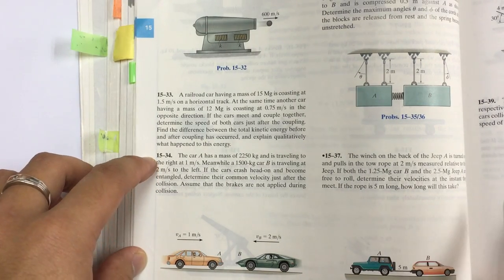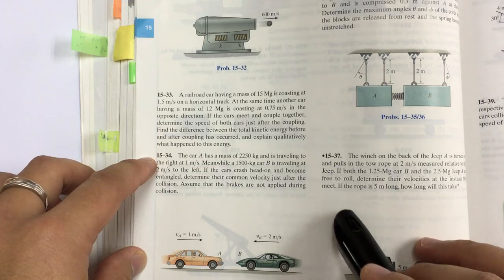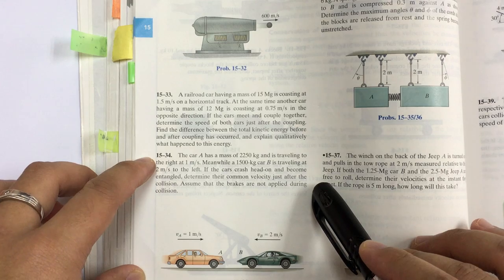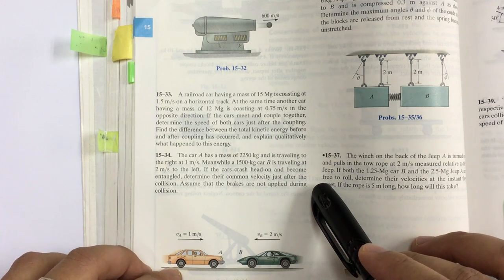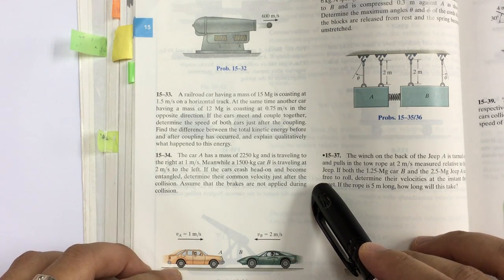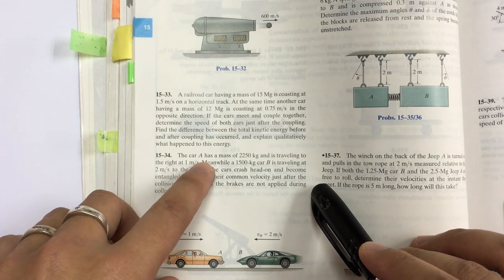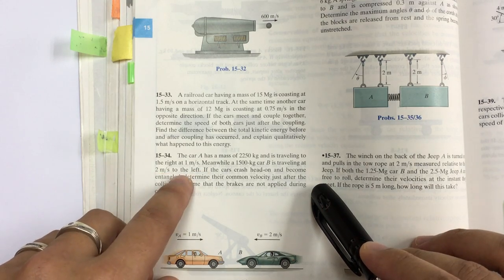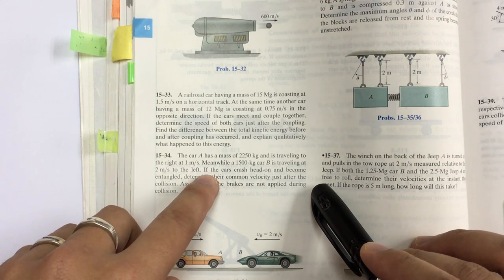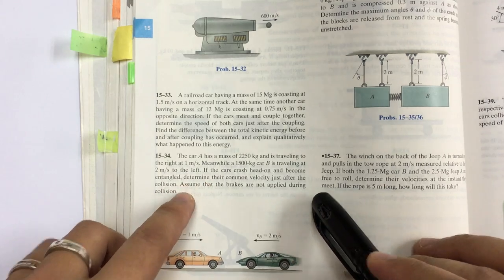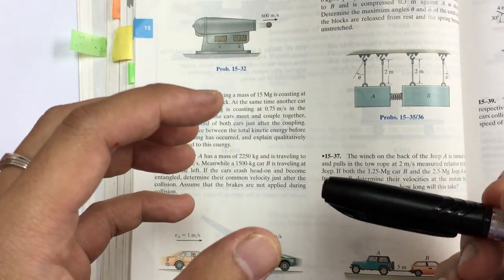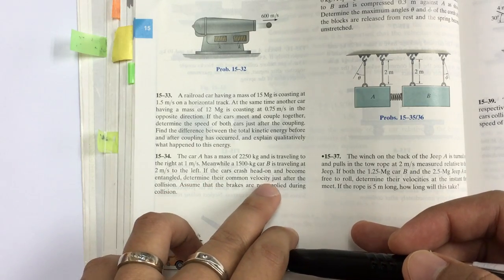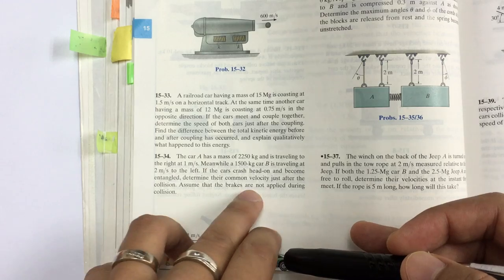In problem 15.34, this is basically a refresher for conservation of momentum. It says here car A has a mass of 2250 kilograms and is traveling to the right at 1 meter per second, meanwhile a 1500 kilogram car B is traveling 2 meters per second to the left. If the cars crash head-on and become entangled, which means that they crash head-on and stick together, determine the common velocity just after the collision.